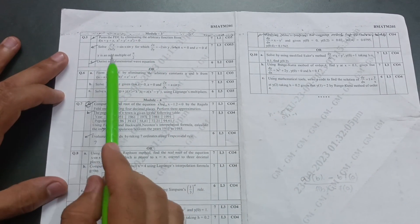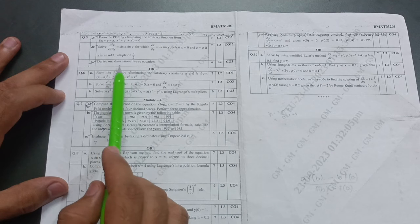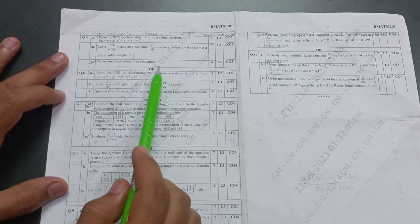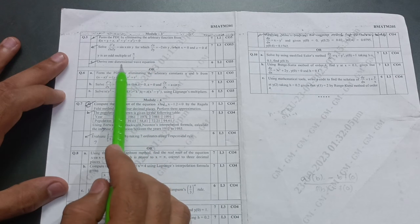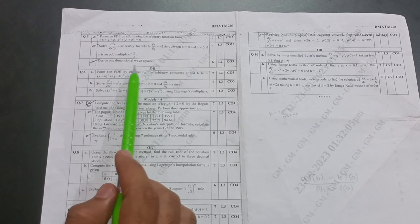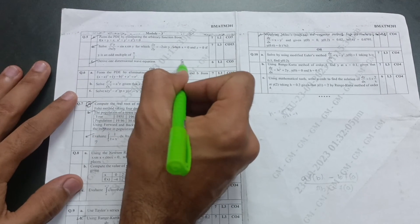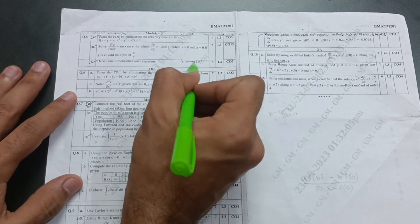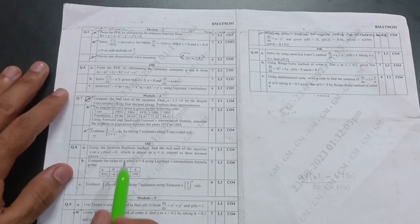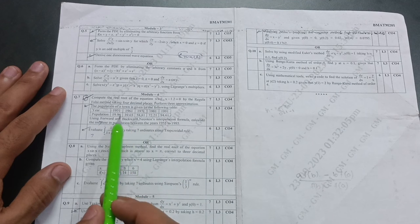Let's come to the third module. In module 3, one definite question will be there: derive one-dimensional wave equation or sometimes heat equation. So these are the two questions, either they will give one-dimensional wave equation or one-dimensional heat equation. Focus on this particular six marks, so 20 plus 6 is 26. Then from module 4, you have to go through two questions at least.